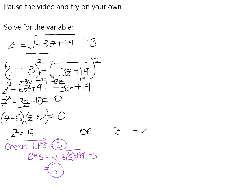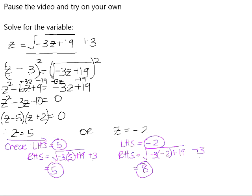If z equals negative 2, the left-hand side is negative 2. The right-hand side is the square root of negative 3 times negative 2 plus 19, plus 3. Negative 3 times negative 2 is positive 6; positive 6 plus 19 is positive 25; the square root of 25 is 5; and 5 plus 3 is 8. We've got a problem because the left and right-hand sides are not equal, so z does not equal negative 2 — it's not a valid solution.